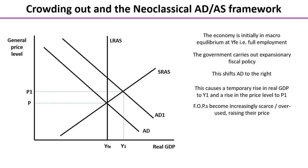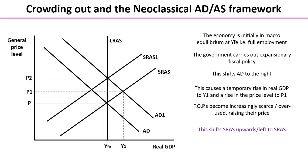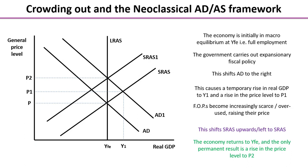The factors of production start to wield their bargaining power and ask for higher income, raising their price. As soon as we have an increase in cost of production, short-run aggregate supply shifts to the left — shifting to SRAS1 — and we return to the full employment level of income. The only permanent result is the increase in the general price level to P2. So neoclassical economists argue that expansionary fiscal policy simply leads to inflationary pressure and no change in economic growth.